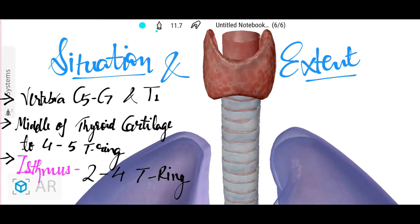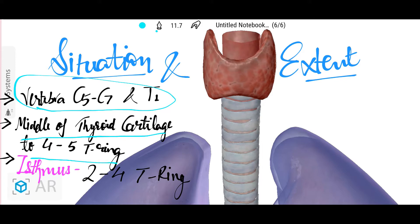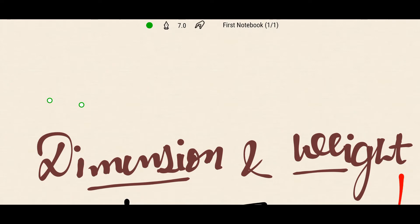Looking at the situation and extent of the thyroid gland, it extends from vertebra C5 to T1. Each lobe extends from the middle of the thyroid cartilage to the 4th or 5th ring of the trachea. The isthmus extends from the 2nd to the 4th tracheal ring.